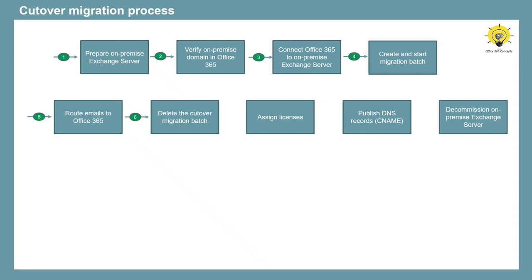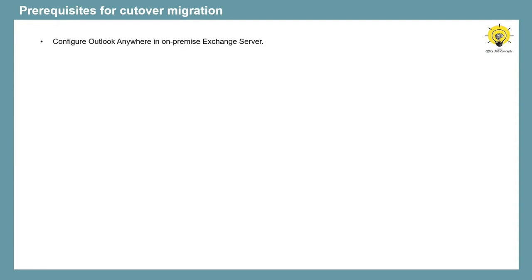Then we will delete the migration batch. We will assign licenses to the users. We will create other DNS records in Office 365 like CNAME record, so that users can connect to their mailboxes using Outlook client. And finally, we can go ahead and decommission on-premise Exchange. Now let's talk about the prerequisites that are required to be met for cutover migration. Cutover migration uses Outlook Anywhere to connect to your on-premise Exchange Server.